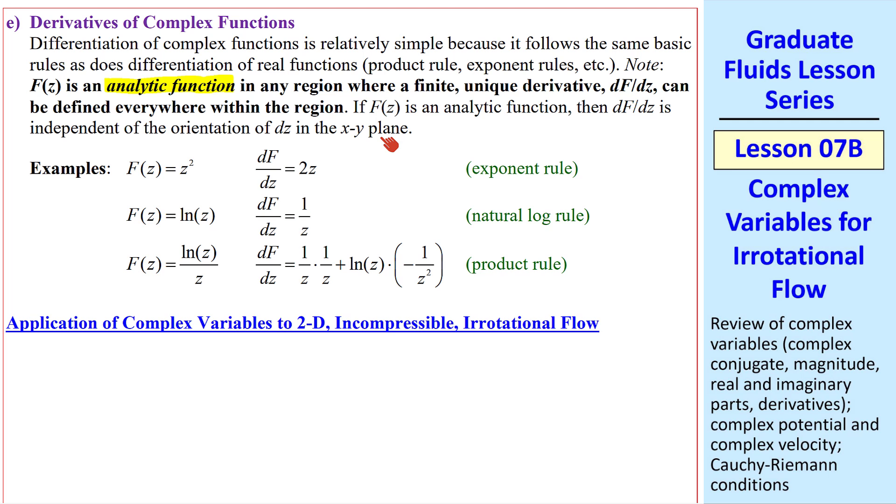Here are some example derivatives. If f is z squared, df dz is 2z, just like with real variables. Similarly, natural log of z has a derivative 1 over z. If we have something like log of z over z, we can use the product rule, just like we do with real variables.